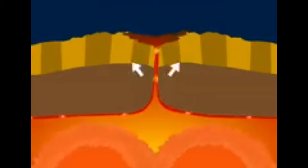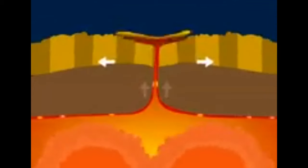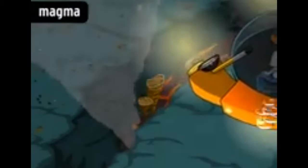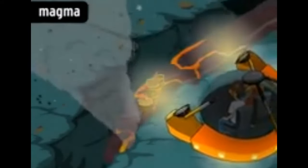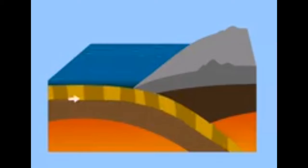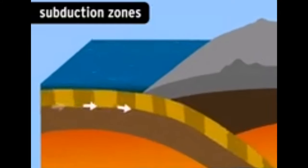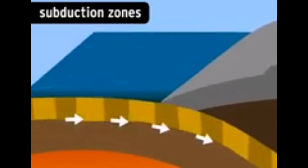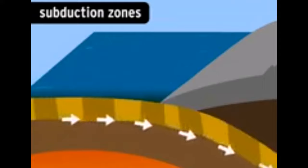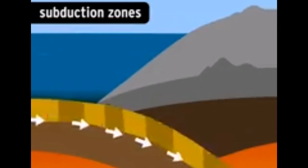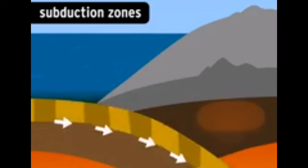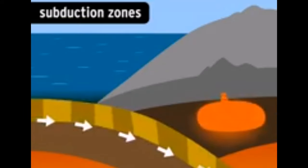At divergent boundaries like the mid-Atlantic ridge, there is a gap in the lithosphere, so magma — molten rock from the mantle — is constantly pushing up along the boundaries, making these the most volcanically active places on Earth. Volcanoes are also common at subduction zones, where a dense ocean plate converges with a lighter continental plate. The heavier plate gets pushed below into the mantle, some of it melts, and the magma erupts farther inland.